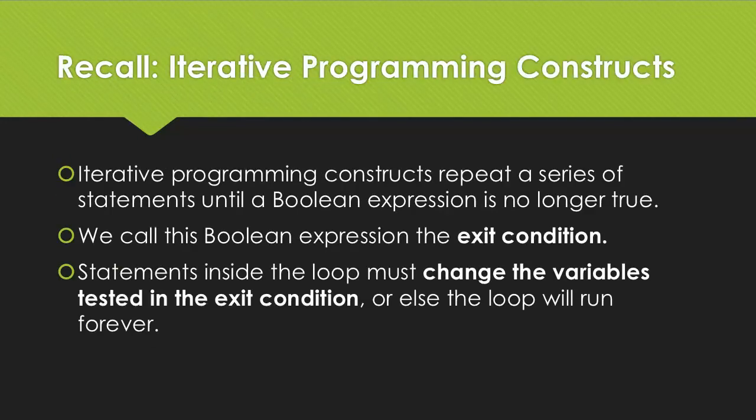One of the key points from the last lesson was the iterative programming construct, or loop. Iterative programming constructs repeat a series of statements until a Boolean expression is no longer true. We call this expression the exit condition. In order for a loop to be successful, the variables in an exit condition must change so that eventually that exit condition will be false. If this does not happen, the loop will run forever — an infinite loop, which is usually a bad thing.